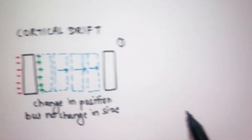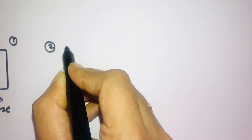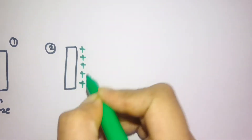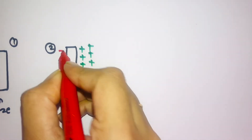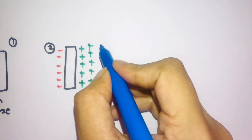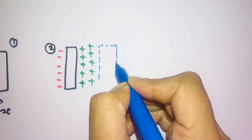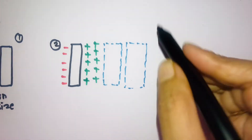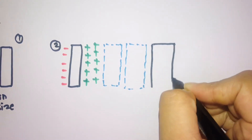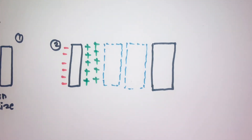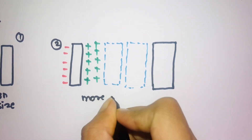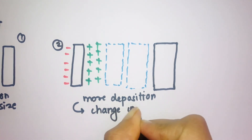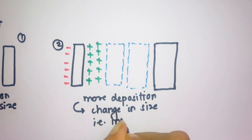The second scenario of cortical drift: here deposition is greater — shown by two columns of plus signs — versus only one column of minus, meaning less resorption and more deposition. So the bone is deposited more, the thickness increases. On the left side it deposits more, on the right side it resorbs less. The end result is the bone moves to a new position and its thickness has increased — there is a change in both size and position.